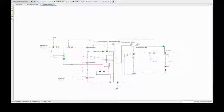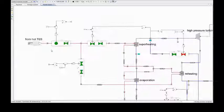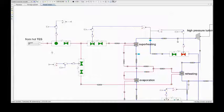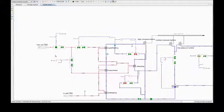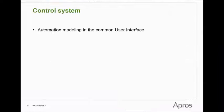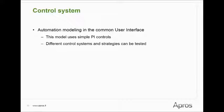All required control loops are integrated to the process models using the same graphical environment. The video shows the control loop for molten salt pump which transfers the hot salt from the storage tank to the heat exchanger train. This model uses simple PI control loops, but the environment is very flexible and open for trying out different control systems and strategies.